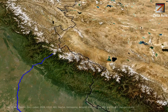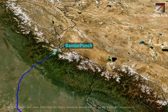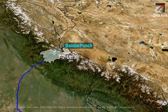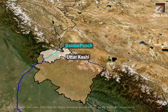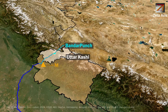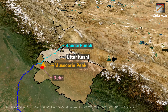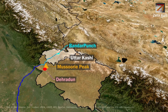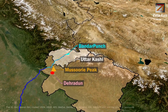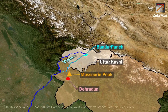The Yamuna river originates in the Bandar Pooch glacier on Bandar Pooch peaks in Uttarkasi district of Uttarakhand. It flows down the hills, passes the foothills of Masuri peak, and emerges in Dehradun valley. In Dehradun valley, the Tons river meets Yamuna.